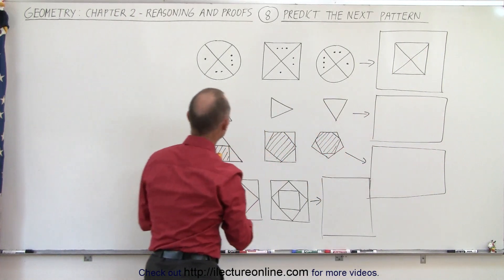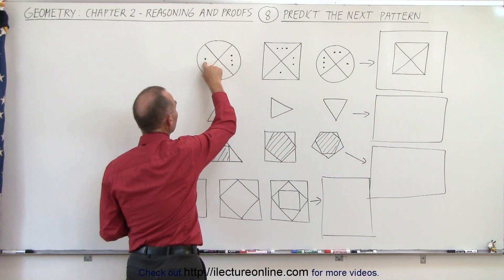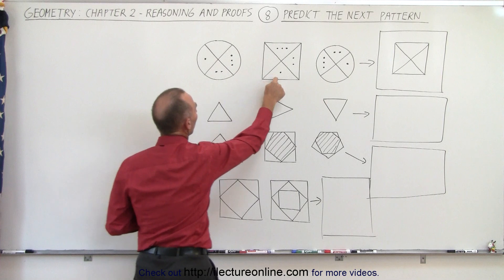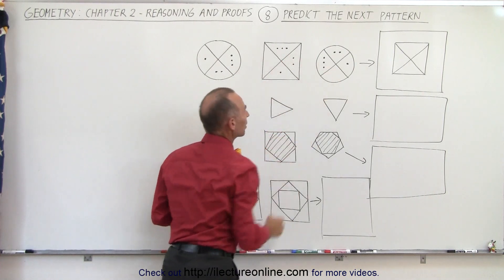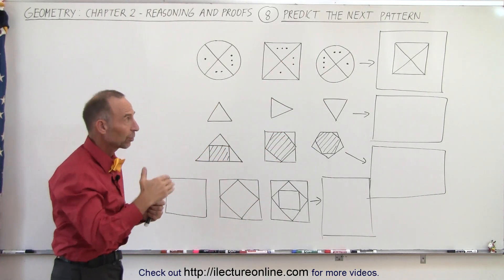Then we also see dots. We see a location here with one dot, two dots, three dots. One, two, and three. One, two, and three. So we have to draw one, two, and three dots somewhere.